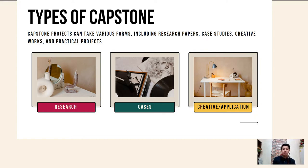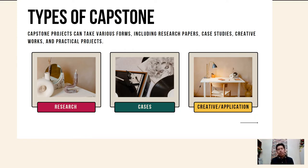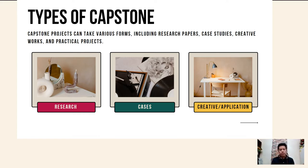What are the different forms of a capstone project or a capstone study? Number one, we have research. Research is a way by which we demonstrate the skills, abilities, and knowledge of students by applying what we call an applied research or an action research — some kind of research that investigates an actual, real-world problem or real-world scenario.